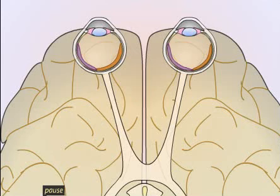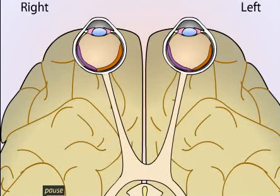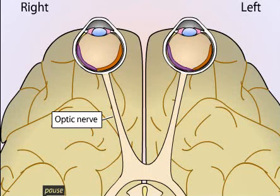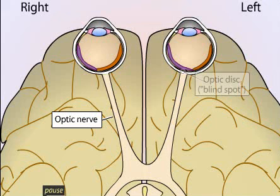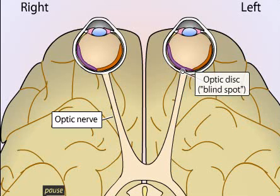Now let's examine the pathways from the retina into the brain. This diagram shows a view of the base of the brain as seen from below. Note that in this view, the position of the two eyes is reversed. The axons of retinal ganglion cells exit the retina via the optic nerve. The optic nerve exits the eye in a region called the optic disc. Because there are no receptors in this region, nothing can be seen in the corresponding part of the visual field. This blind spot does not appear as a dark spot; rather, it is simply a region from which we cannot obtain visual information.